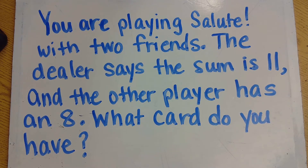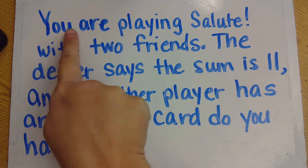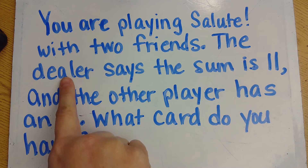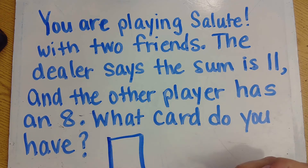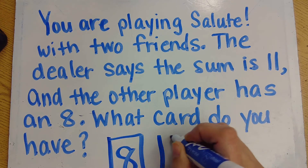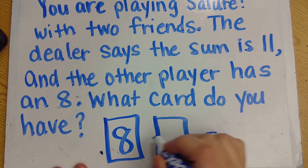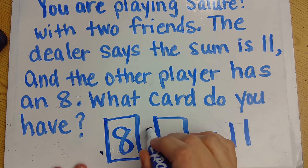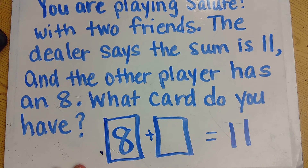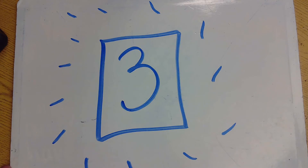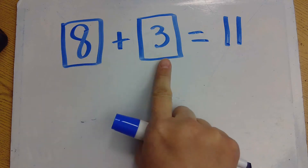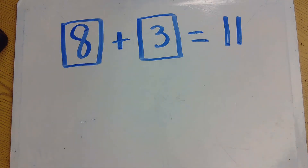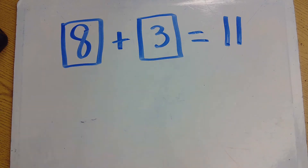Let's go ahead and start out with our math message for today. It says: you are playing salute with two friends. The dealer says the sum is 11, and the other player has an 8. What card do you have? Your card is a mystery, and the dealer says that the answer is 11. If you said that your card was a 3, you got it! So we know that you had the 3. 8 plus 3 equals 11.